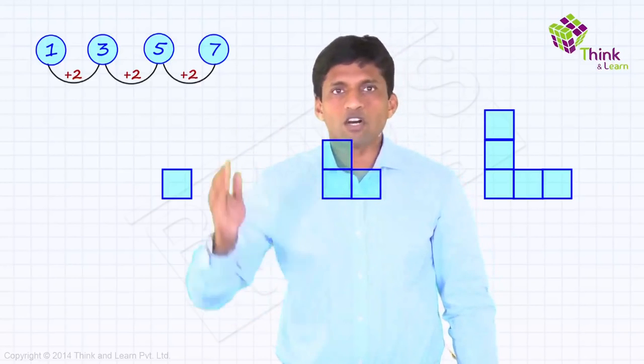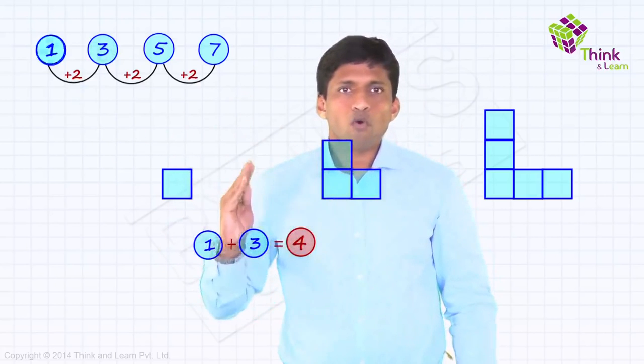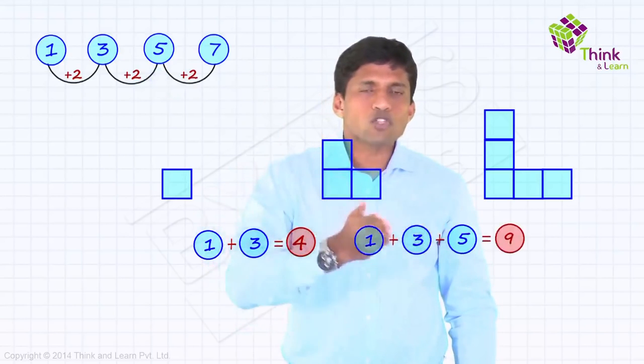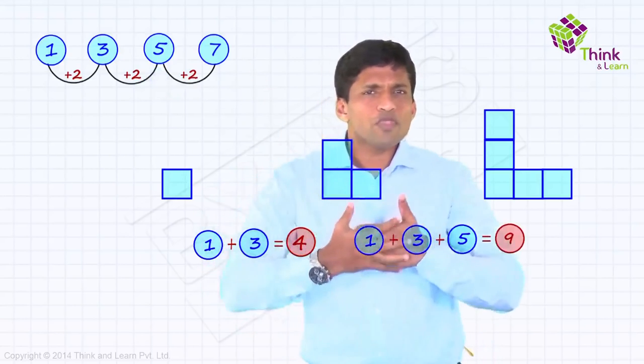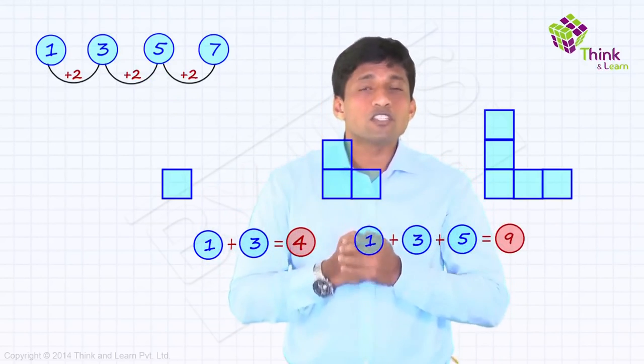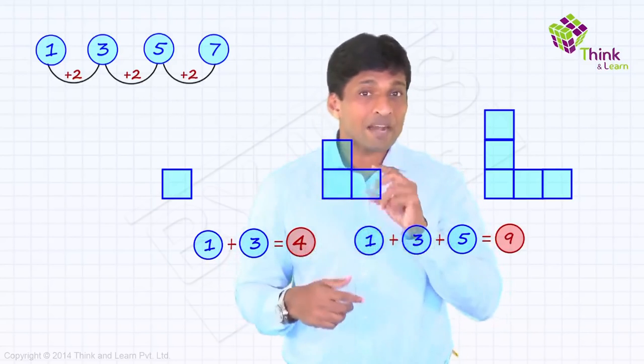If I start adding terms here. 1. 1 plus 3 equal to 4. 1 plus 3 plus 5 equal to 9. So, we are getting square numbers. So, you should think about why are we getting square numbers here? Why are we getting square numbers while adding odd numbers? That, again, it can be visualized.